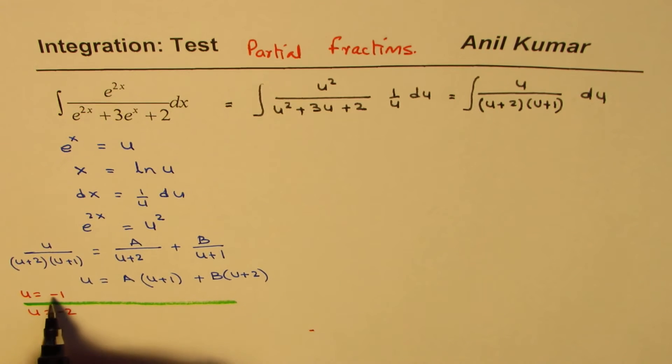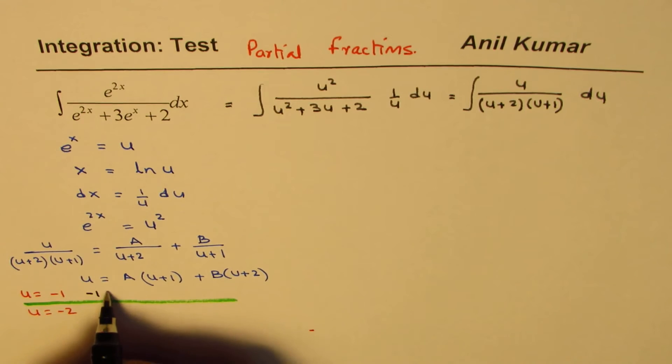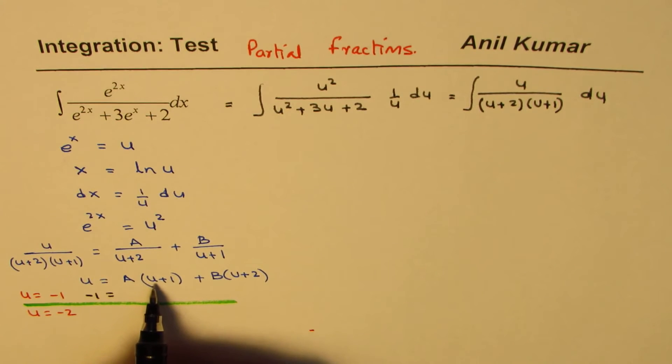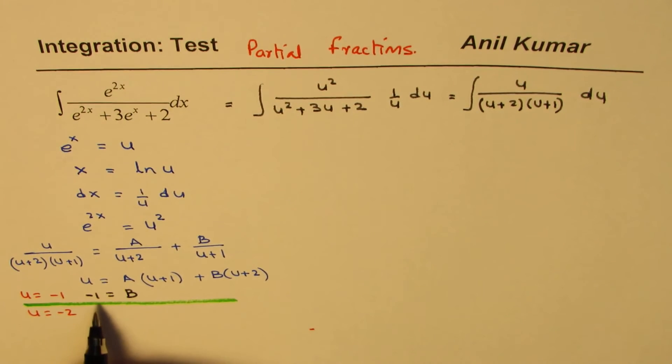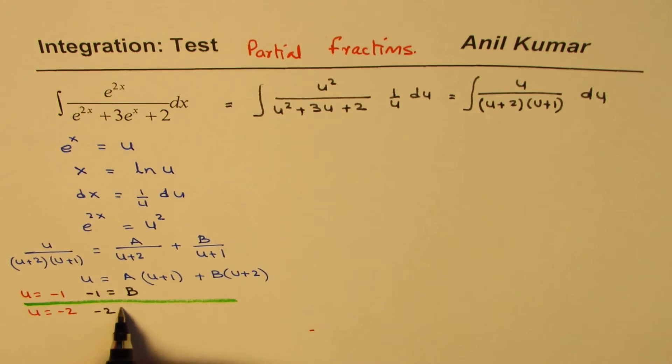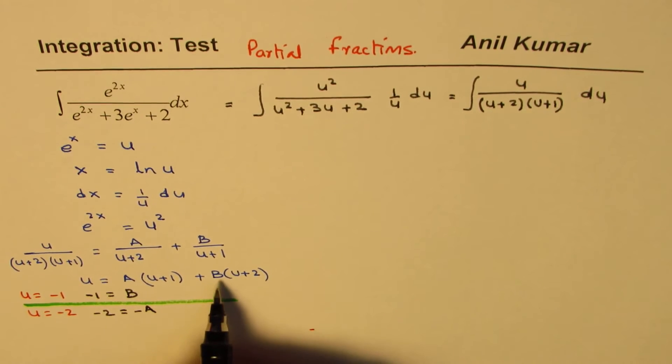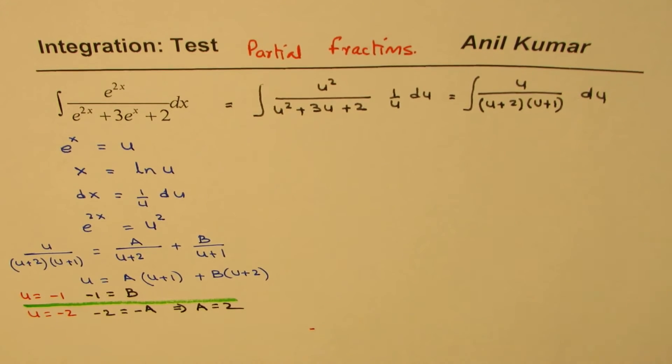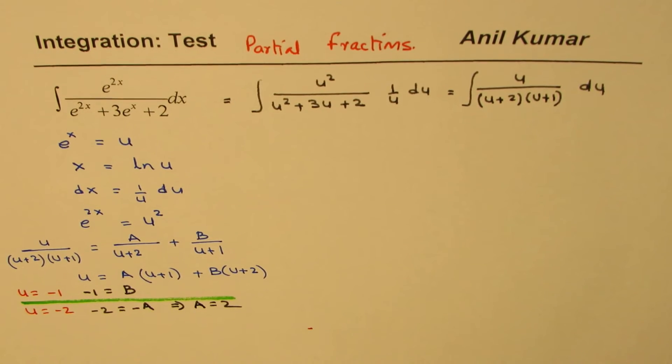So if I substitute u as minus 1, I get minus 1 equals, minus 1 makes this 0, but that will be minus 1 plus 2 as 1, so we get B. So B is equals to minus 1. If I substitute minus 2, so minus 2 is equals, that will be minus A, and this term will be 0, and that gives you A as equals to 2. So we get both values of A and B.